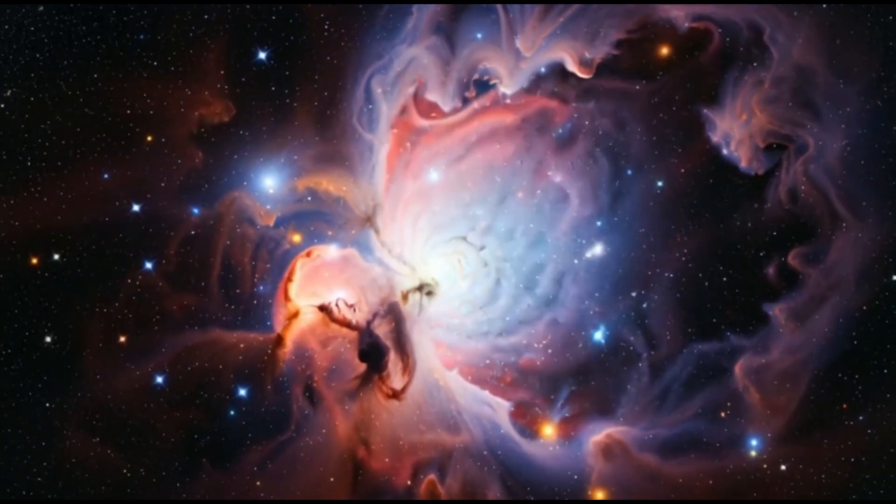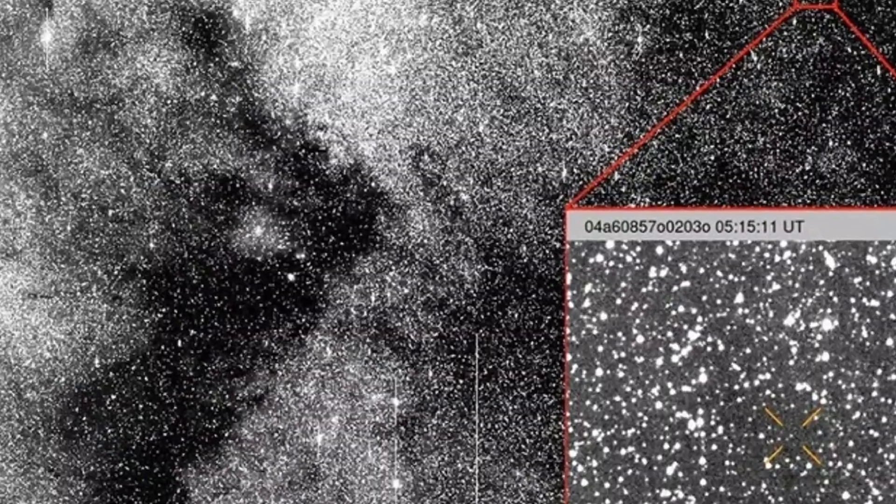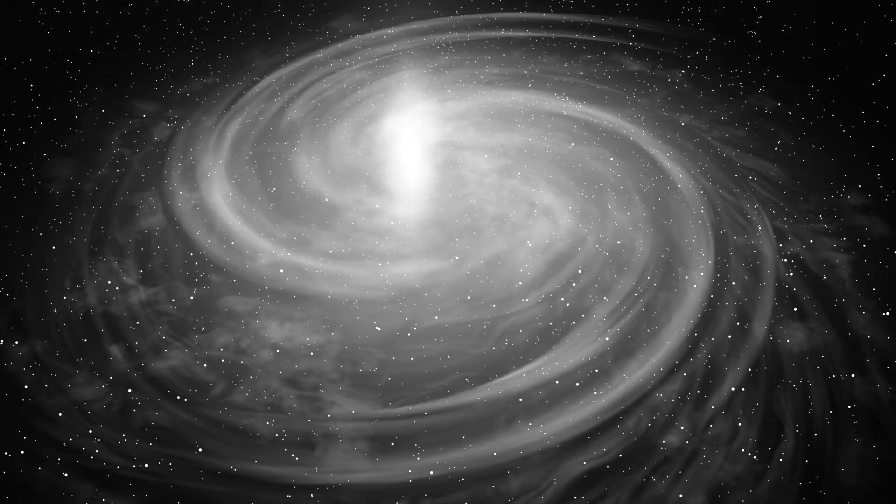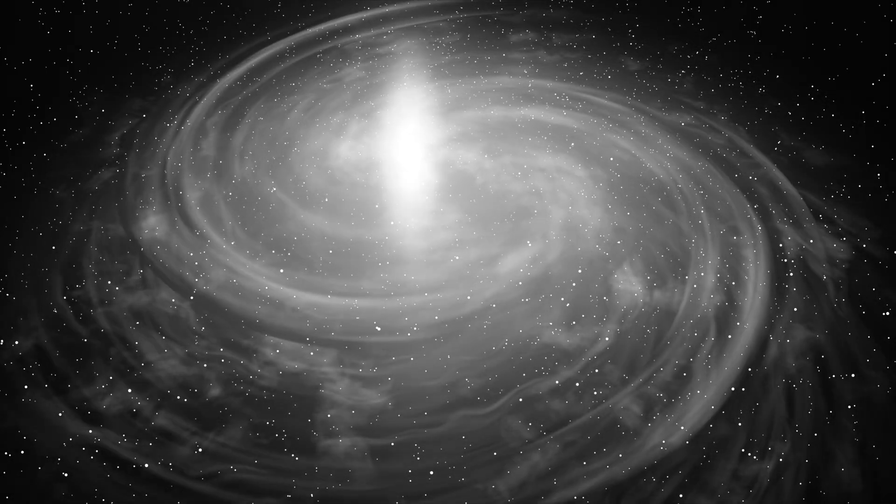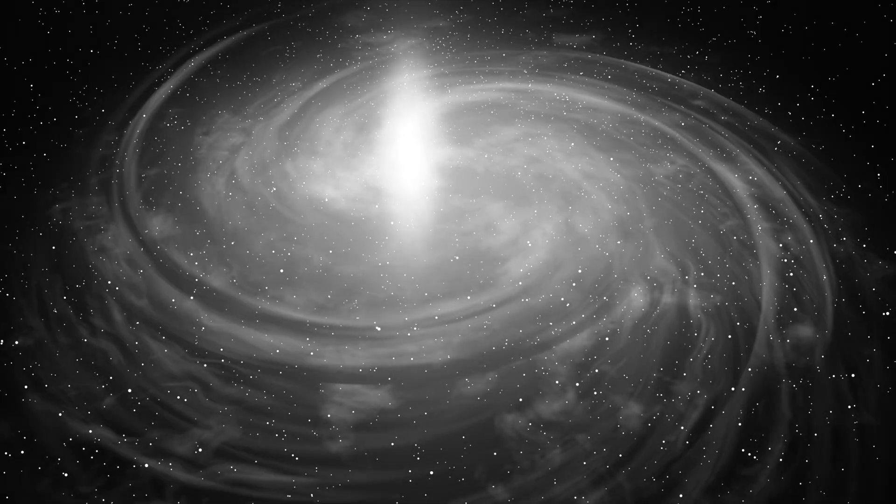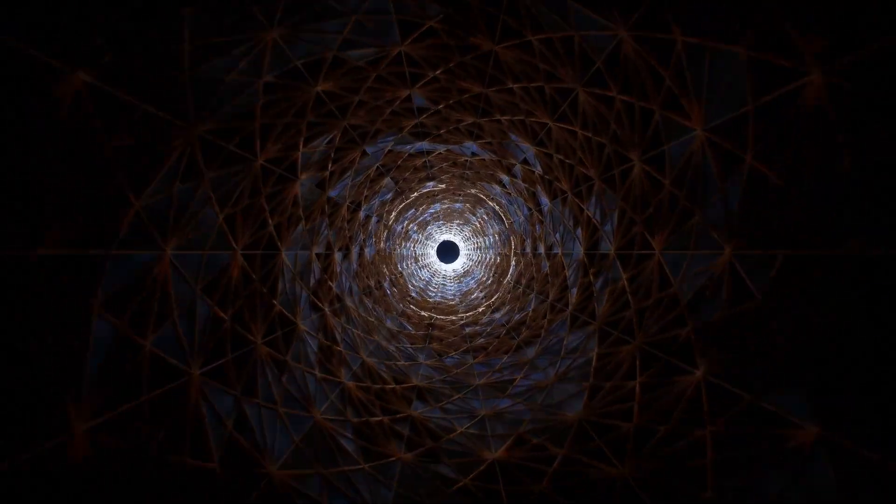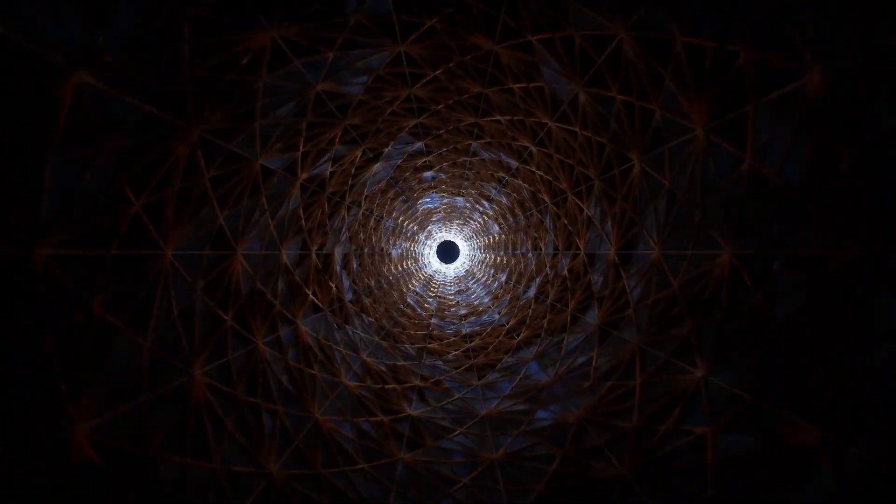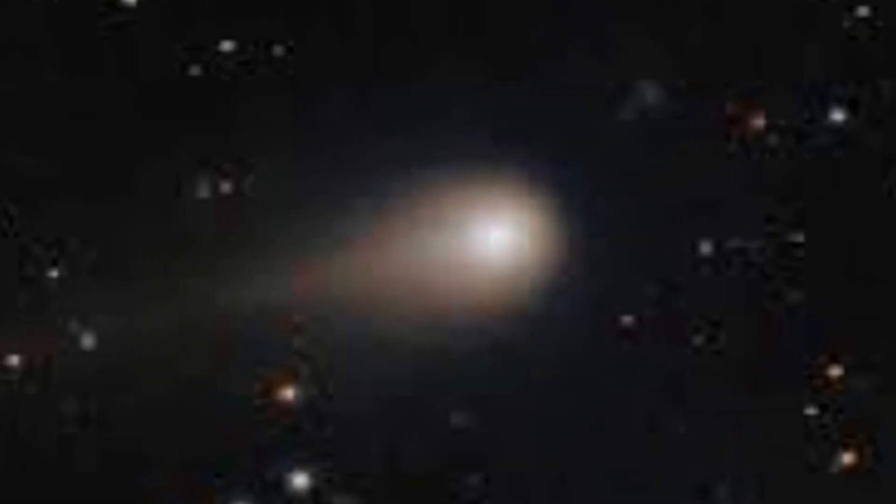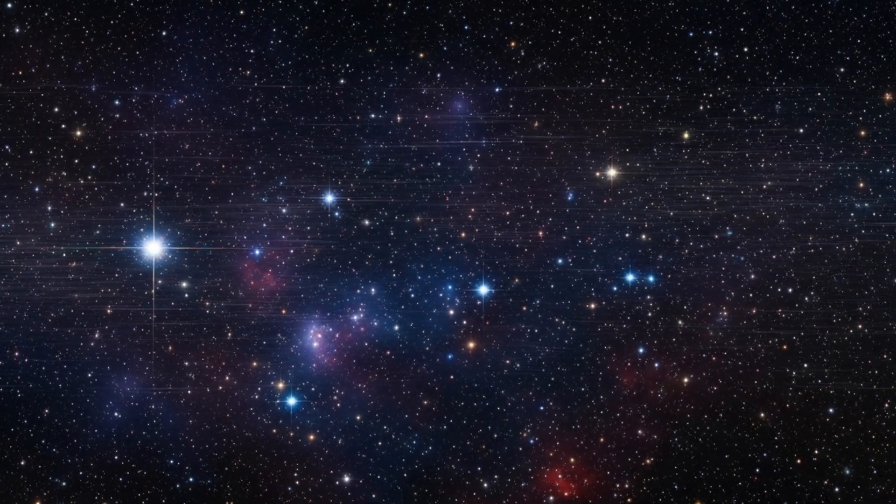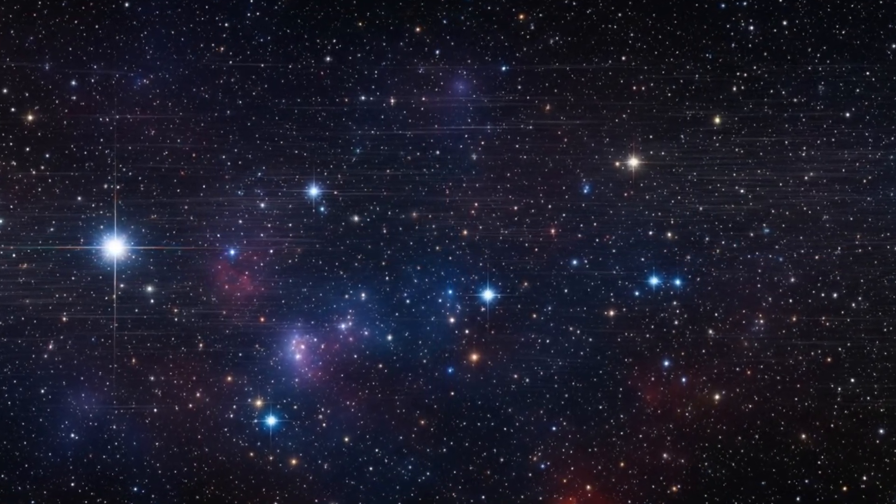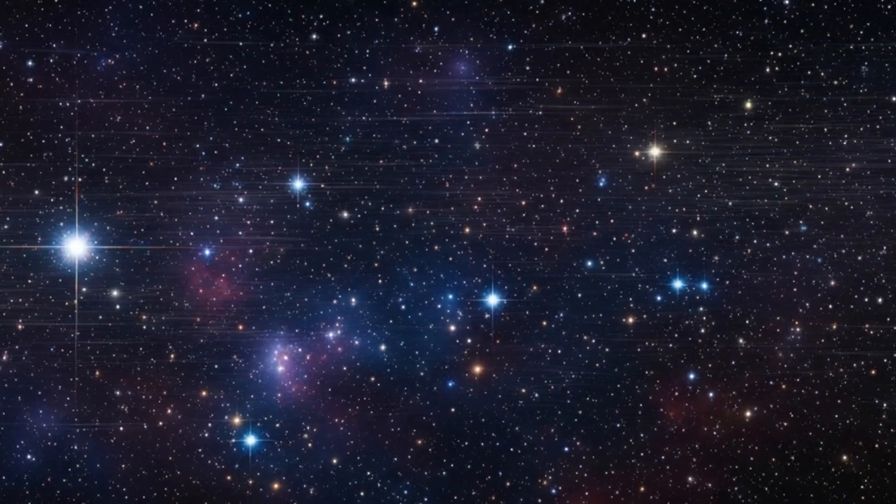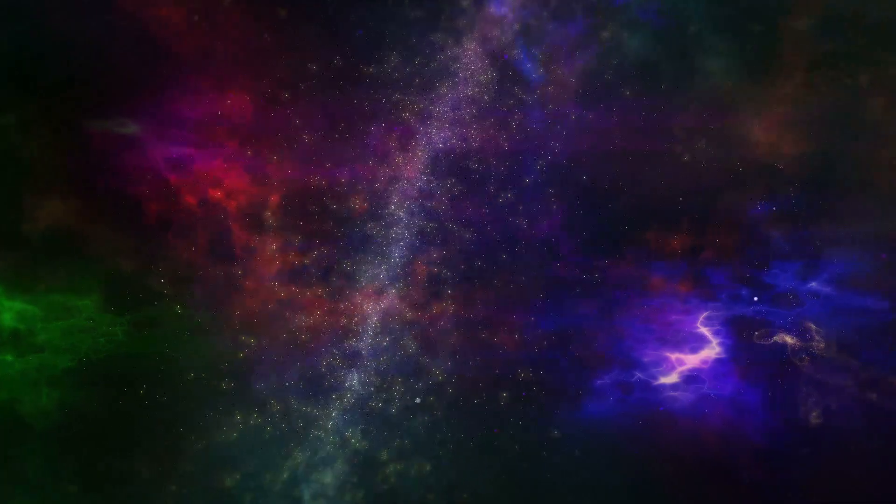In the end, 3i Atlas isn't just another comet passing through our skies, it's a message from somewhere far beyond our solar system, carrying the fingerprints of a time and place we'll likely never visit. It moved through our neighborhood silently, revealing just enough to intrigue us, but not enough to fully explain itself. Its chemistry defied logic, its path defied probability, and its presence reminded scientists how little we truly know about the galaxy around us.